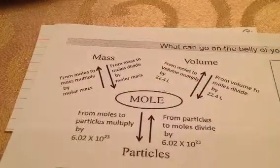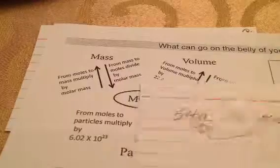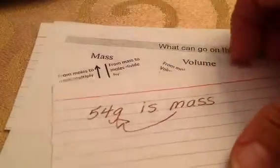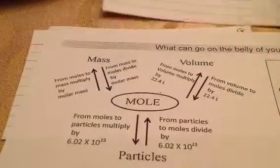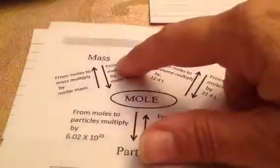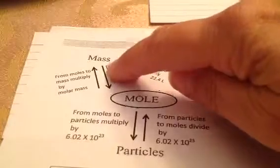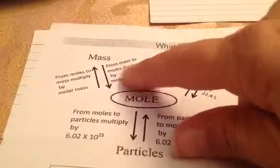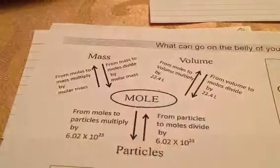I have 54 grams, so 54 grams is mass. That lets me know where to start on my mole map. I'm at mass, and according to the arrow, the question asked me to solve for moles. From mass to moles, I divide by molar mass.